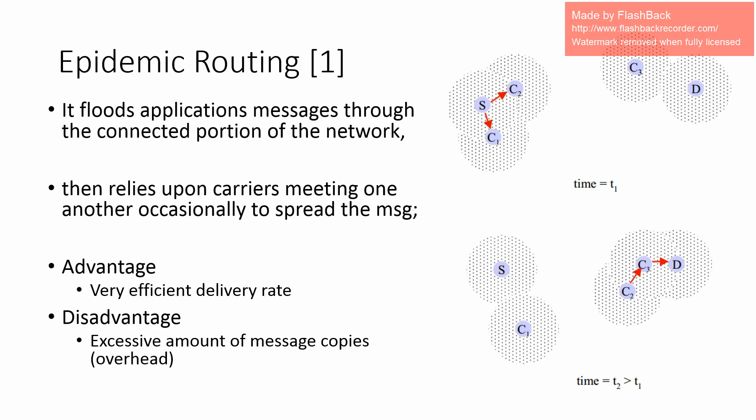In DTN routing, we have some well-studied examples. Epidemic routing is a protocol that spreads copies of messages along the network, relying on node mobility to deliver them. If a source node wants to send a message to a destination node, it will rely on node mobility. This is a very efficient protocol with a very high delivery rate, but it also generates a lot of overhead.